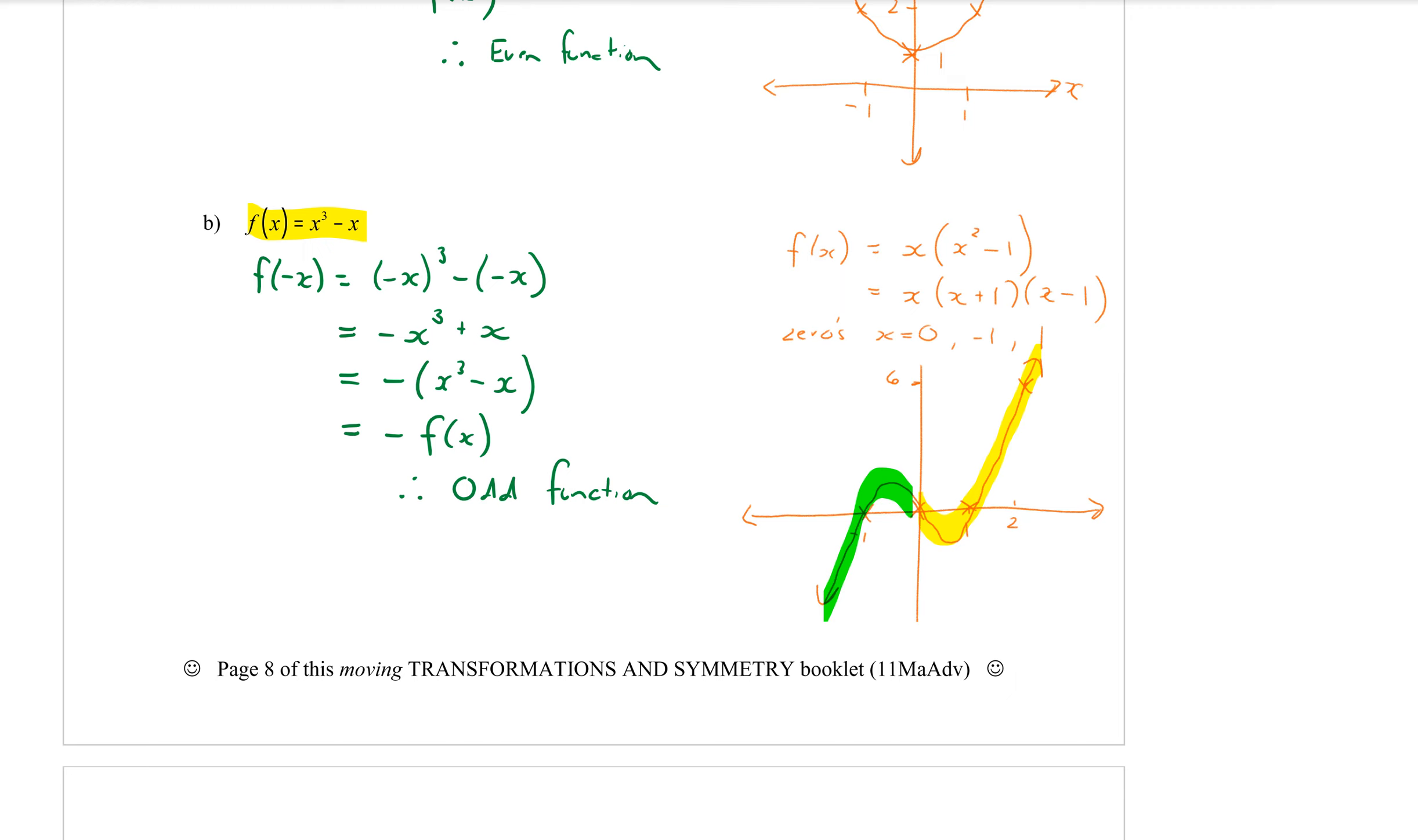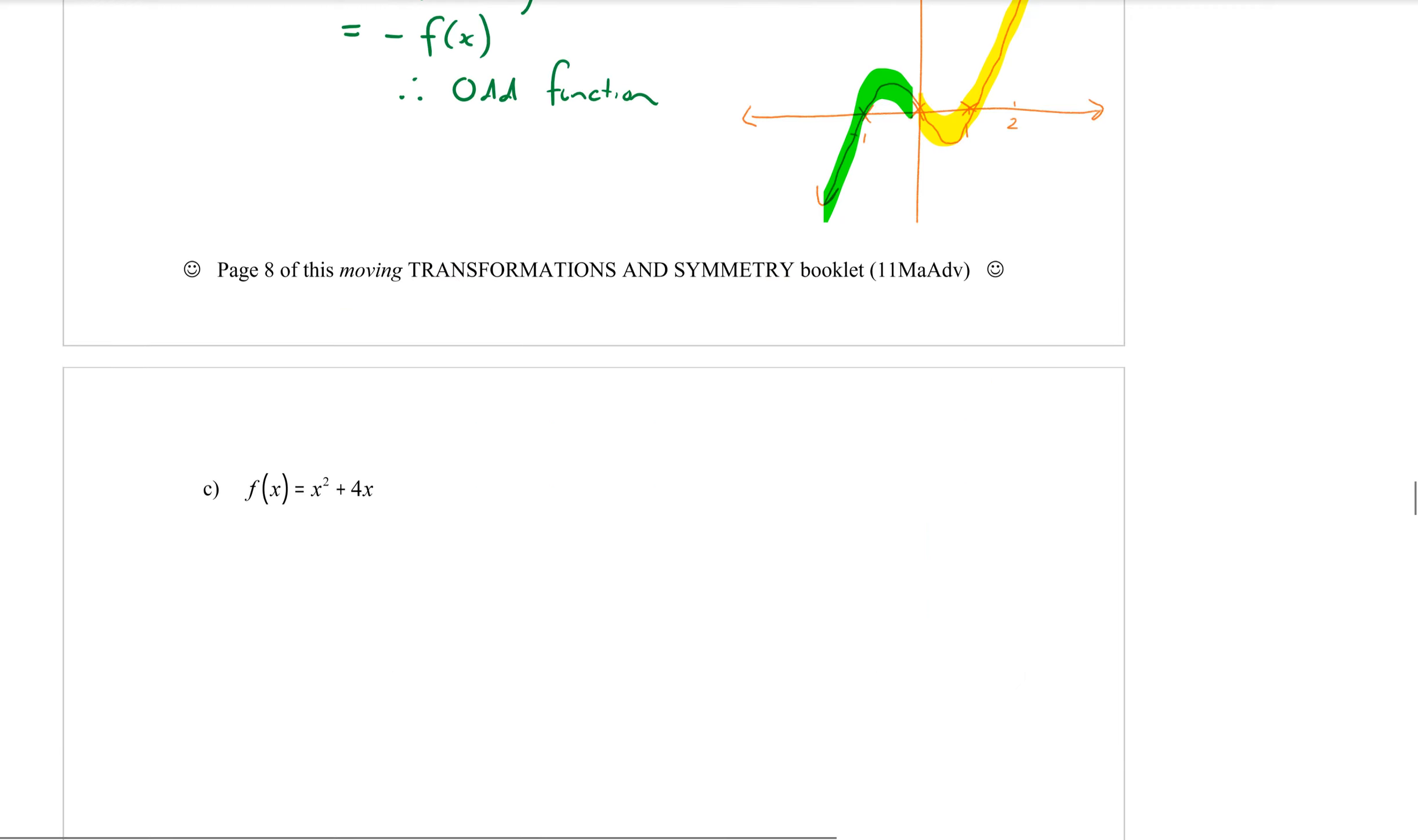Okay we have another question on the next page, c. So to find out what type of function this is we always start by subbing in negative x. So every x, the x squared will become negative x squared. The 4x will become 4 and then brackets negative x. When we square a negative it will become a positive x squared. 4 times negative x is negative 4x.